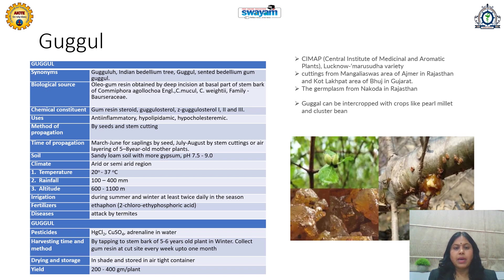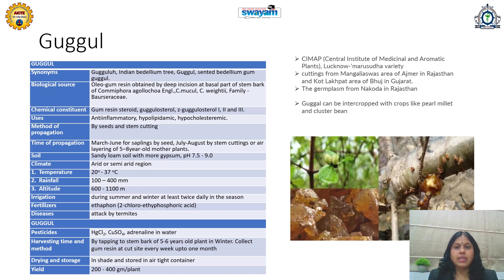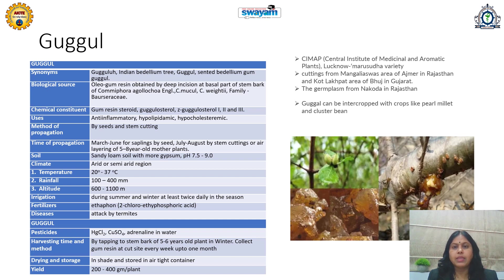Harvesting is done by tapping the stem bark of a 5–6 year old plant in winter — unlike most plants which are 4–6 month crops, this plant must grow for 5–6 years before harvesting. Collect the gum resin at the cut site every week for up to 1 month. Shed drying is suggested, then store oleo gum resin in an airtight container. Yield: 200 to 400 grams per plant. The variety commonly cultivated is Maru Sudha, developed by CIMAP Lucknow. Cuttings from Mangali Ajmer in Rajasthan and Kodlakpat area of Bhuj in Gujarat are also utilized.